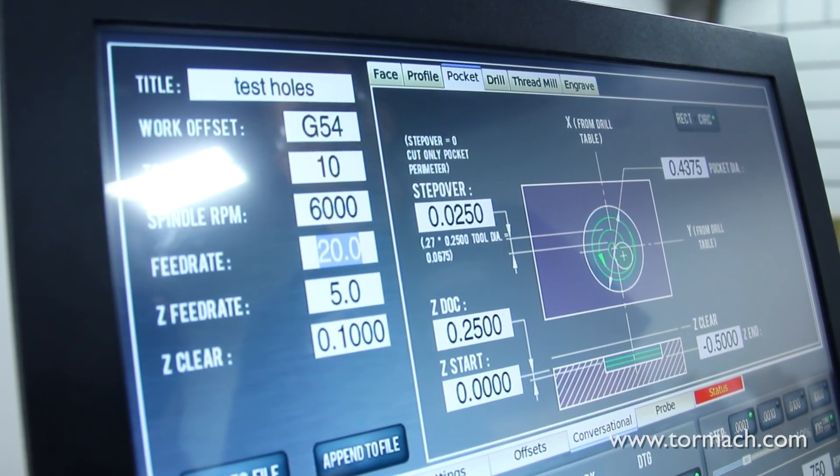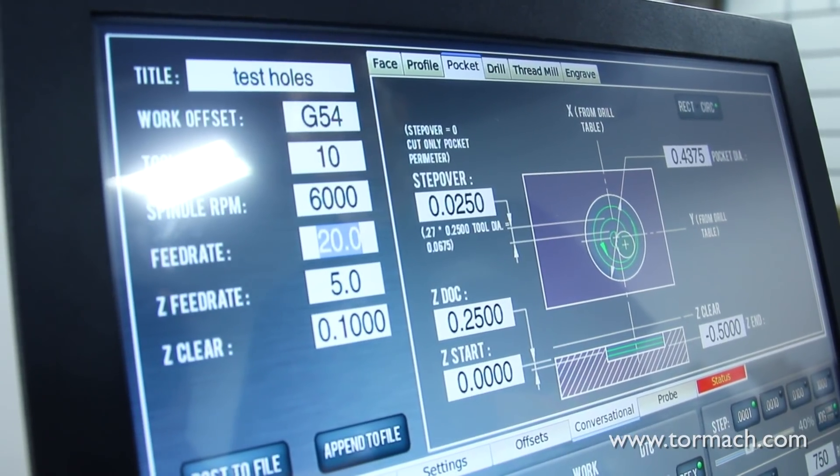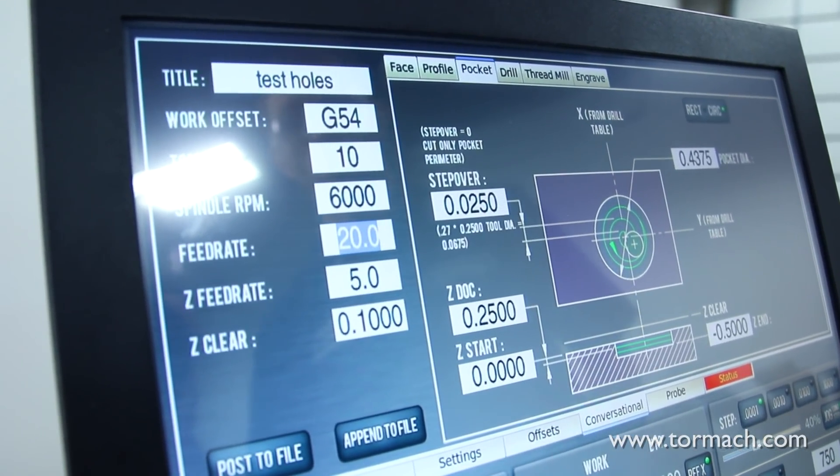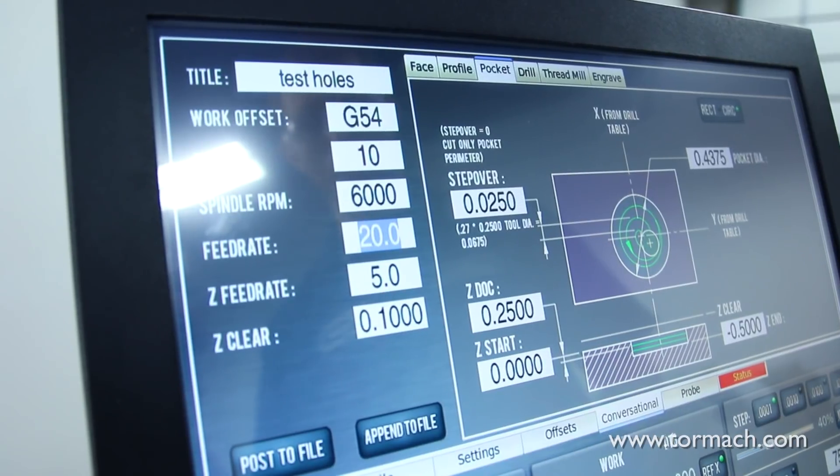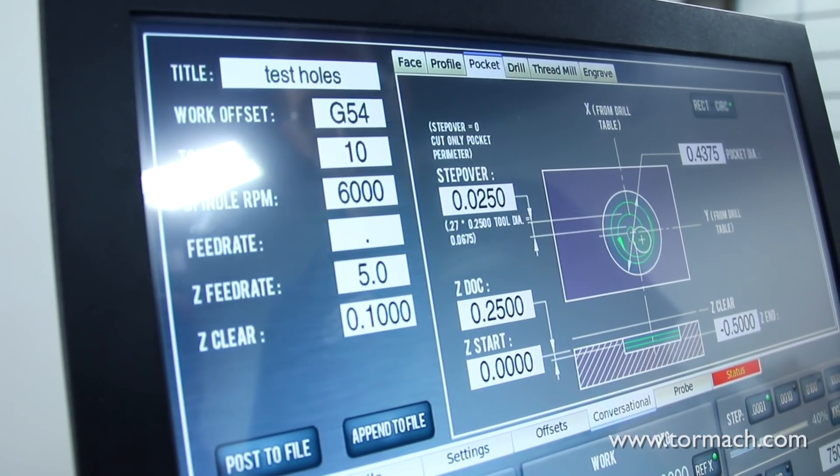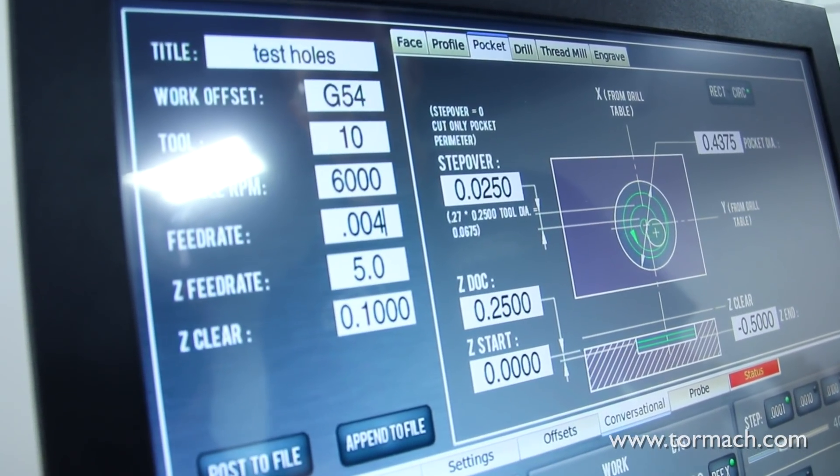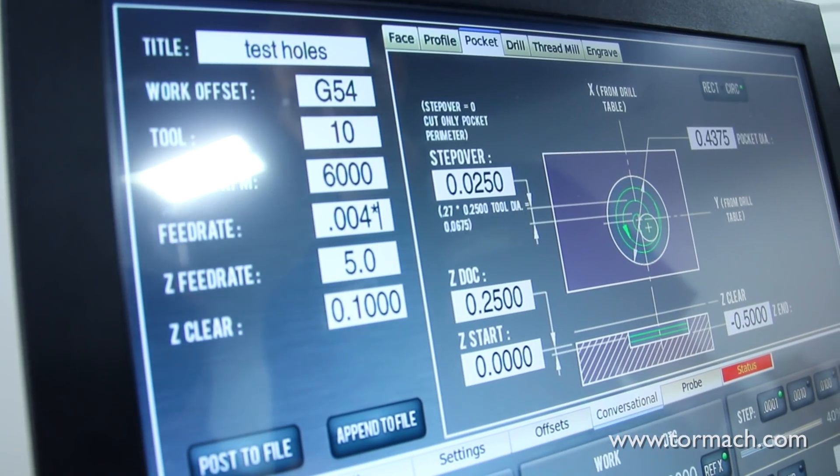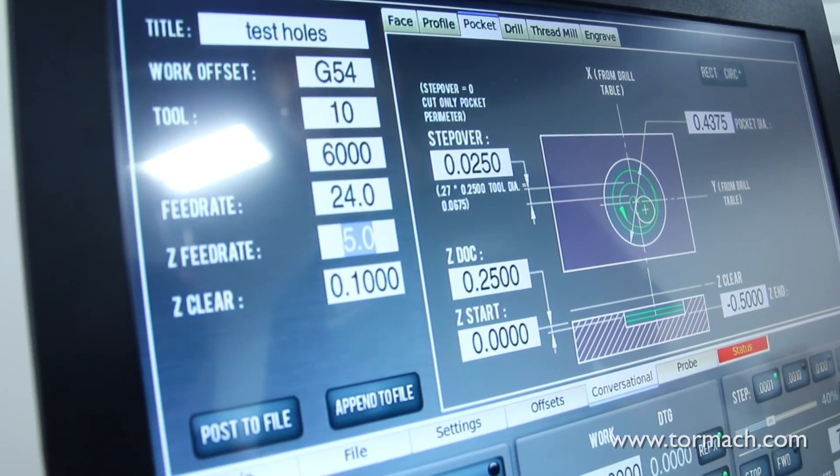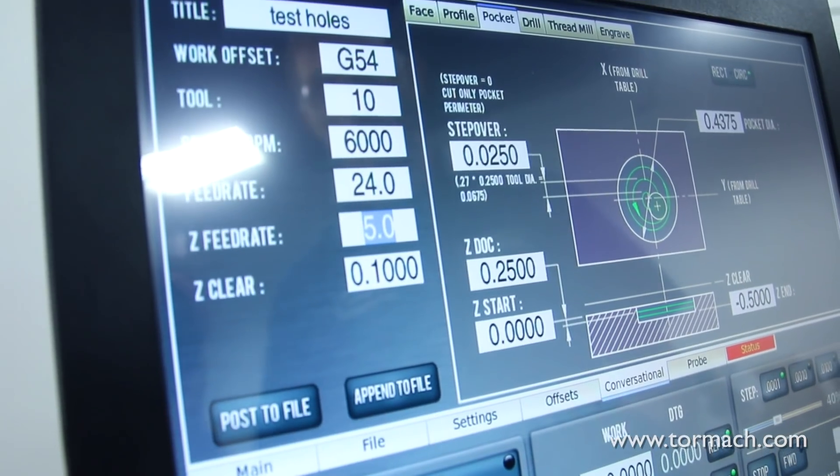Our feed rate, for something like this I'd like to run two to three thou per tooth. If we do the math on that, it's a two flute end mill, so we're at four thou per revolution times 6,000 RPM, giving us a 24 inch per minute feed rate.